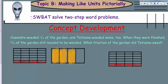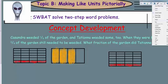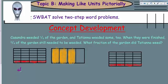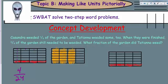We're adding two amounts: the one-sixth that Cassandra did, and the three-quarters that never got finished — because what's left would be Tatiana's portion. We have our one-sixth, and now we need three-quarters. Looking at this, one-sixth becomes four out of 24. We can rename these: four over 24. Then for three-quarters, six times four is 24, so six times three gives us 18.